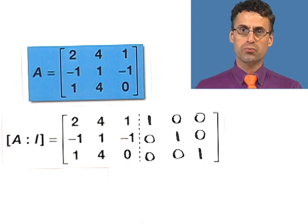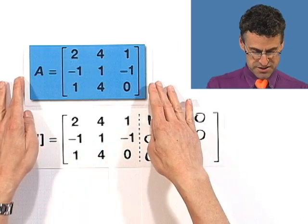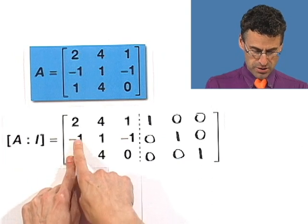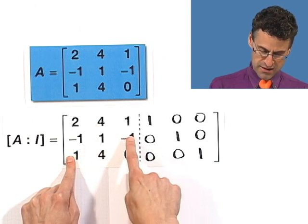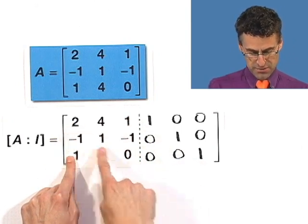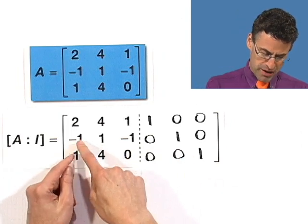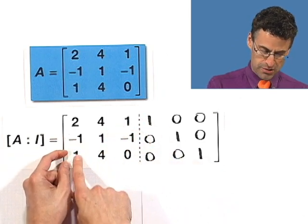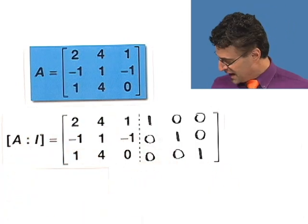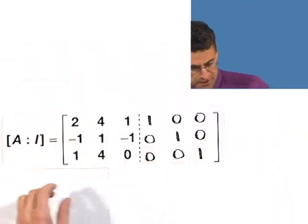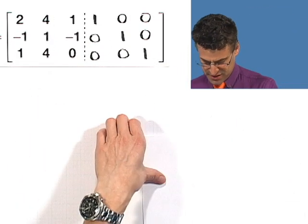Now the goal is just to do row operations and to transform this side to look like this side. I want to get 0s all underneath here, and then I want to get a 0 here and a 0 here, and then get a 0 here and a 0 here, and then just divide by whatever's there to make them all 1s. The tricky thing is there's kind of a little bit of an order to it. You don't want to do some of these steps intermediately because you want to make sure first you get 0s all over here so that if you use things later, you're not going to disrupt things over here. So how are we going to start this?